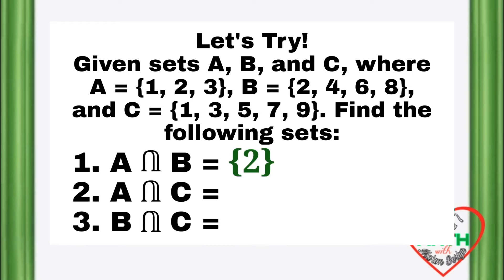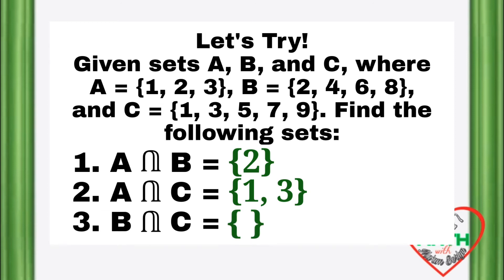For number 1, A intersection B is equal to the element {2} because this is the only element common to set A and B. For number 2, A intersection C is equal to the elements {1, 3}. And for number 3, B intersection C is a null or empty set because there is no element common in both B and C.